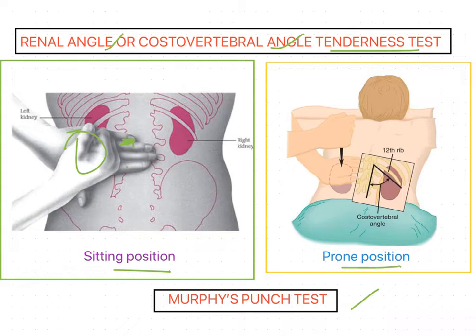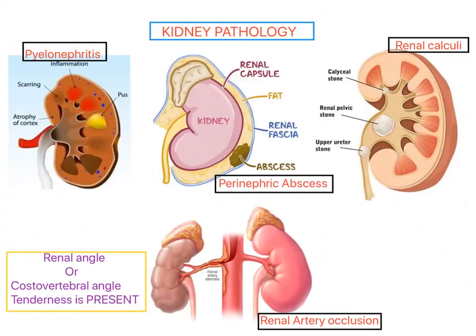If tenderness is present, it indicates kidney pathology and the test is positive. We can now see some examples where this test is positive — some kidney diseases or kidney pathologies. The first one is pyelonephritis, which is one of the commonest kidney pathologies.